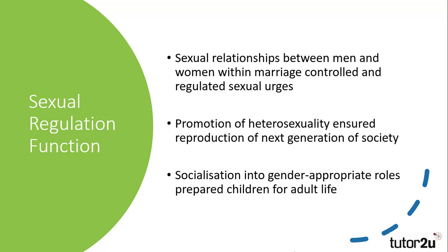The second function that requires development is that of sexual regulation. There are a number of aspects to how family units can regulate sexual activity. The first is by having a healthy sexual relationship within a marriage, so males and females could satisfy their sexual urges without committing deviant sexual behaviours such as adultery or incest. The family also regulates sexual behaviour by promoting heterosexuality as a norm, ensuring the reproduction of the next generation. Despite this leading to criticisms of homosexuality being promoted as deviant, we have to remember the norms and values of when Murdoch was writing.